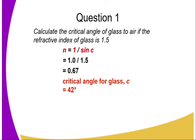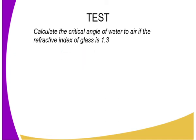Calculate the critical angle of glass to air if the refractive index of glass is 1.5. So N is given by one over sine C. One divided by the sine of C is 0.67, and therefore the critical angle — the sine inverse of 0.67 — is 42 degrees.